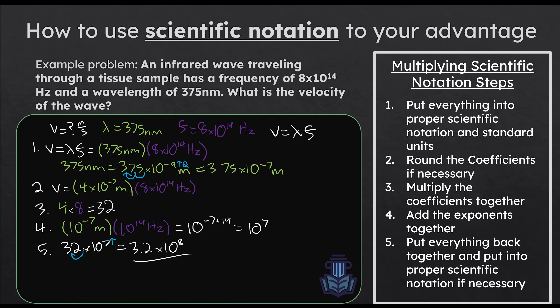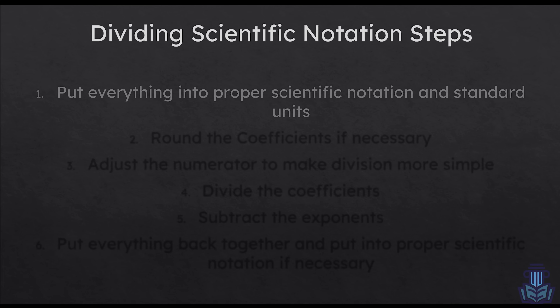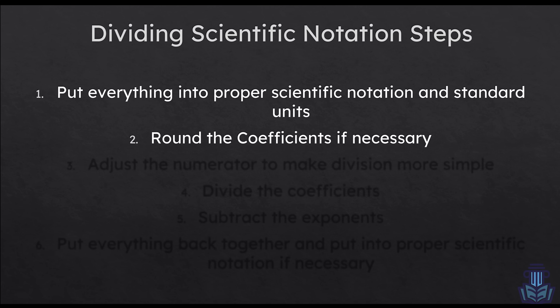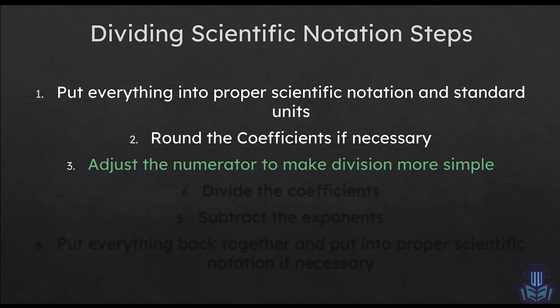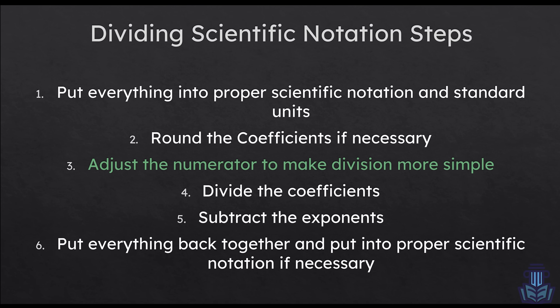Things tend to get a little more confusing when we get into division. Most of the steps are pretty much the same, except we're doing division and subtraction instead of multiplication and addition. We're going to start by putting things into scientific notation and standard units, and we can round coefficients to the closest whole number if necessary. Here's where the new step comes in: you can adjust the numerator to make the division simpler. Then split the coefficient from the scientific notation, divide the coefficients, subtract the exponents, and put everything back together.